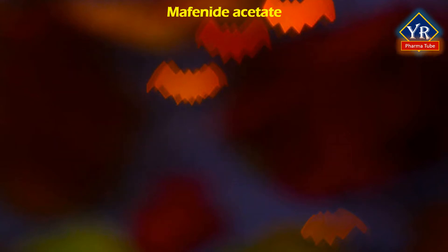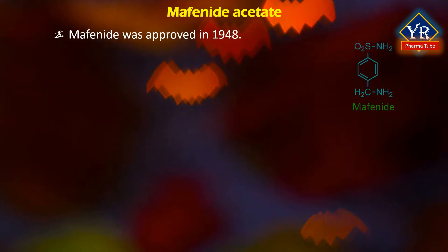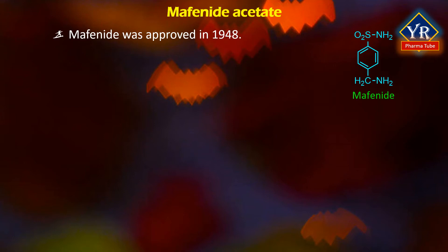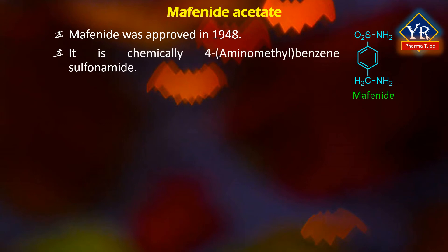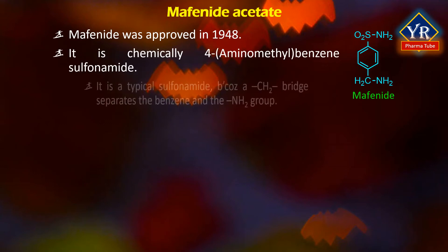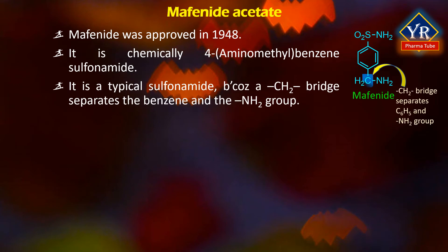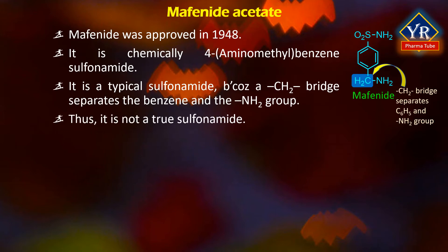The next drug is mafenide acetate. Mafenide was approved in 1948. It is the acetate salt form of mafenide, a synthetic sulfonamide analog of PABA, with topical anti-infective activity. It is chemically 4-amino-methylbenzene sulfonamide. It is an atypical sulfonamide because a CH2 bridge separates the benzene ring and the amine group. Thus, it is not a true sulfonamide type compound as it is not inhibited by PABA.